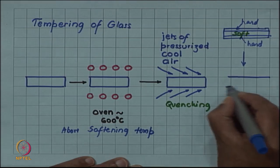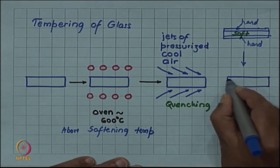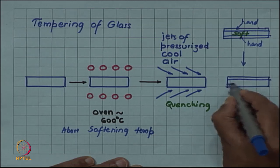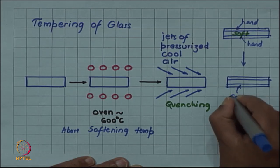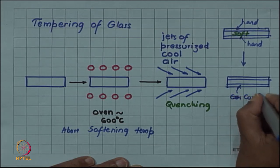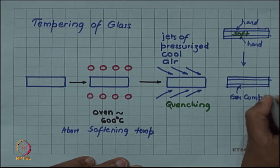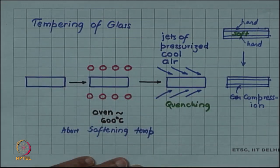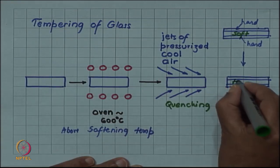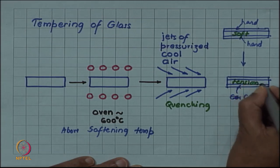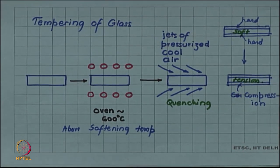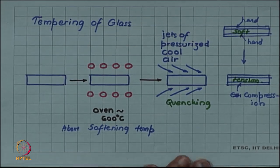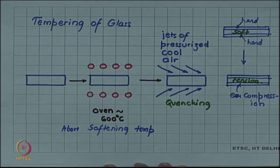This leads to compression in the outer layer and tension, the compensating tension, in the inner layer. For example, car windows or any cases where human safety is important, tempered glass is used.